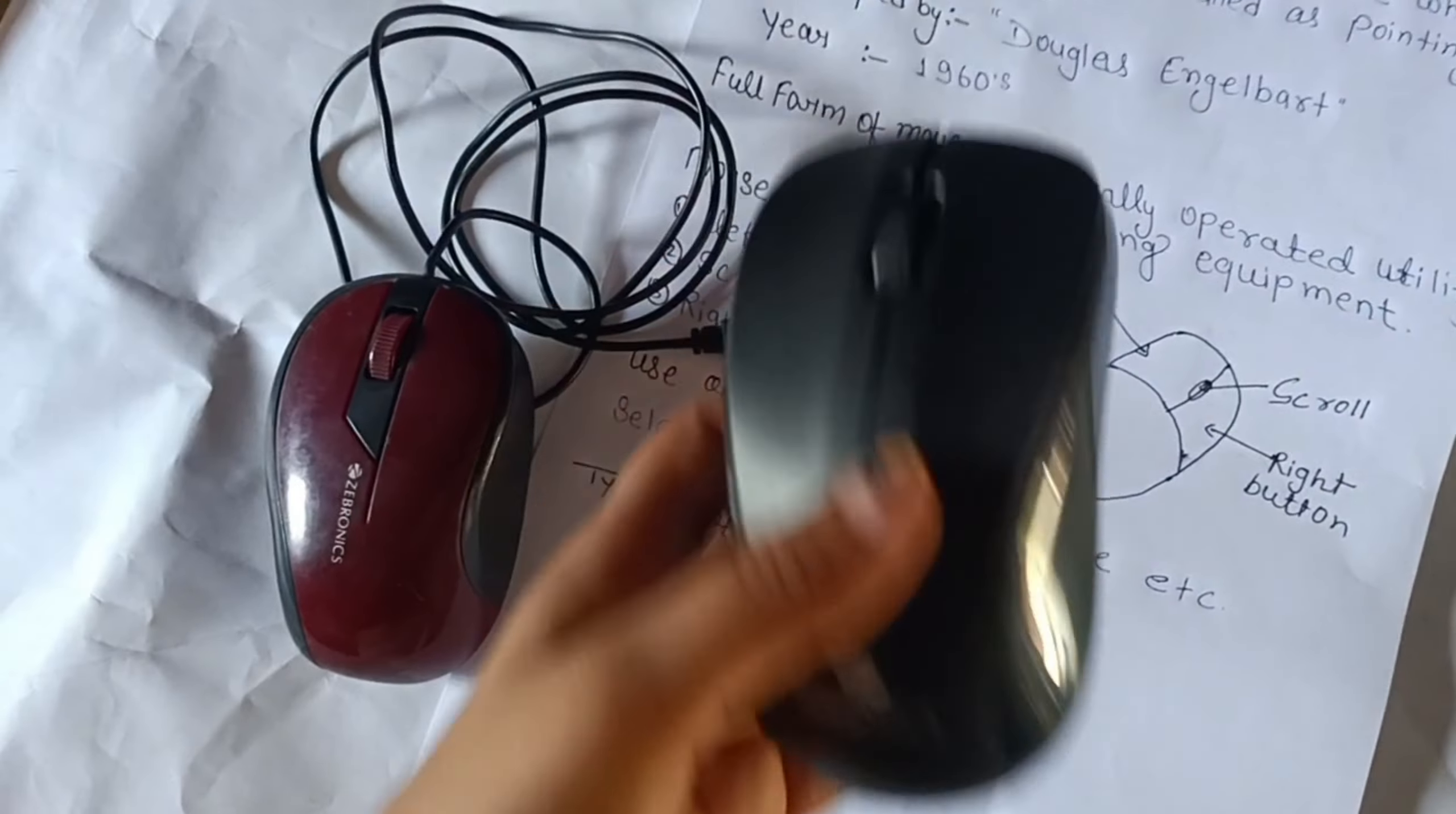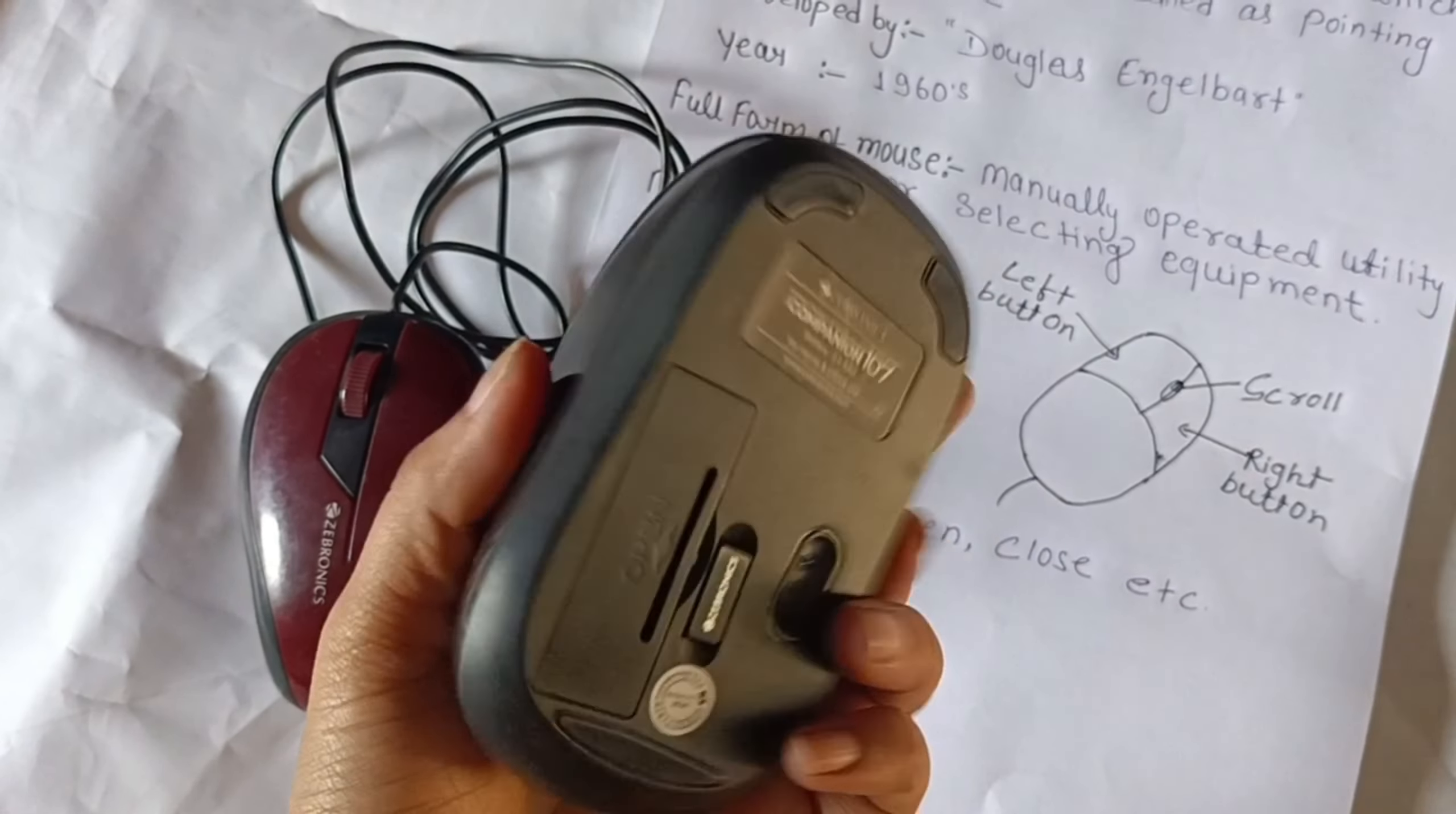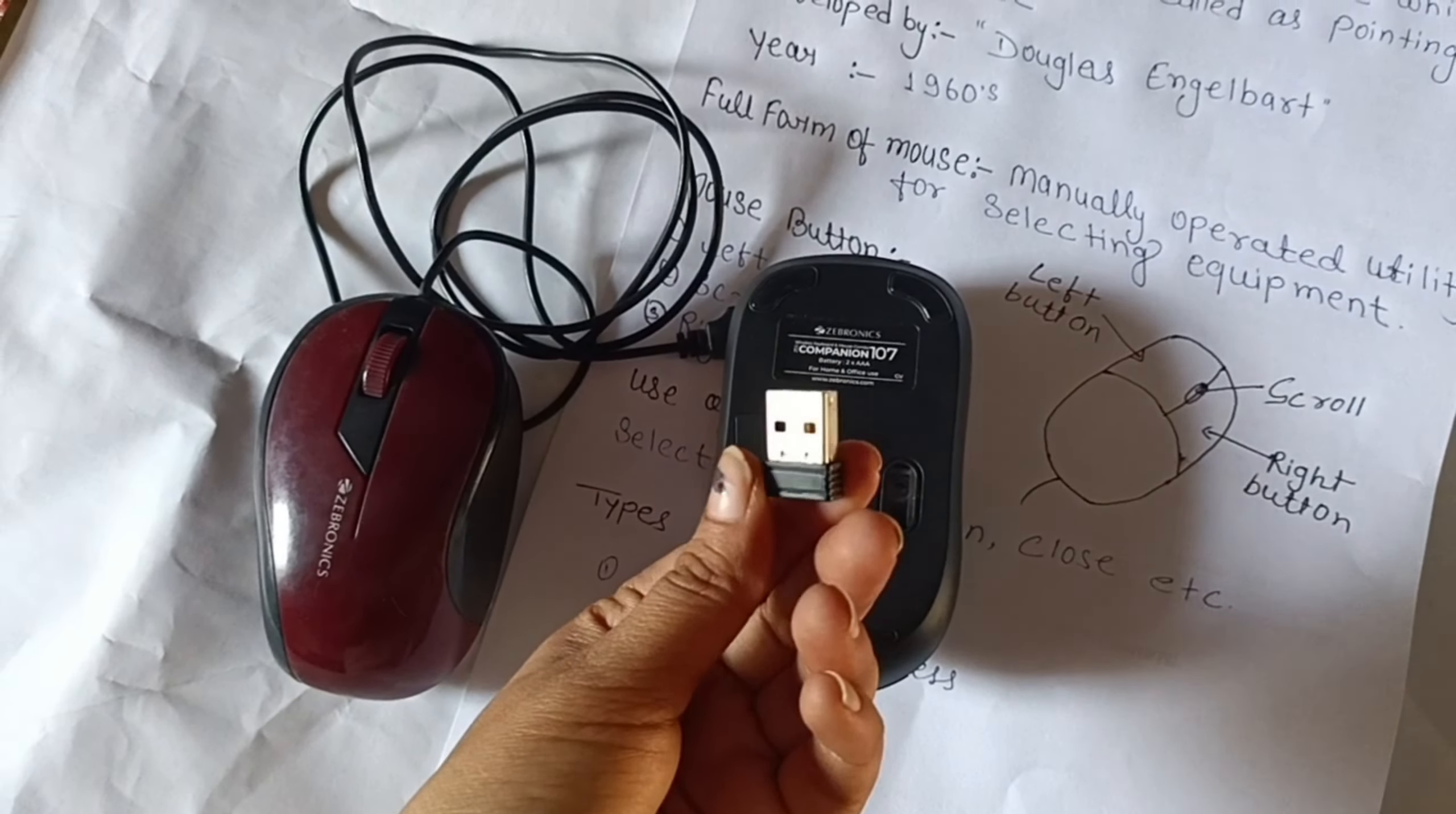Now we will use wireless mouse. There is no difference. This is the left button, this is the right button, and this is the scroll button. If we use this on your PC, this is a wireless mouse.